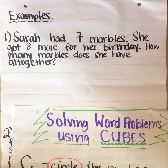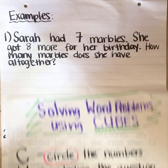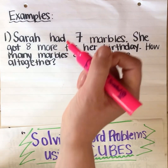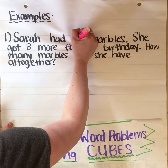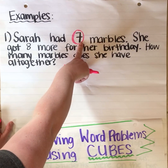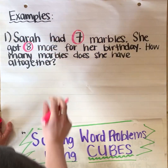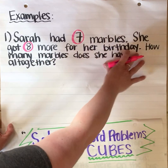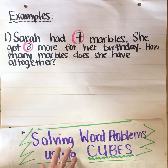Okay so if you remember, the first step of CUBES is to circle the numbers. So I'm going to take the same color — I'm going to take pink — and I'm going to circle seven, which is how many she started with. And the next number is she got eight more for her birthday. I don't see any other numbers, so those are the only things I'm going to circle.